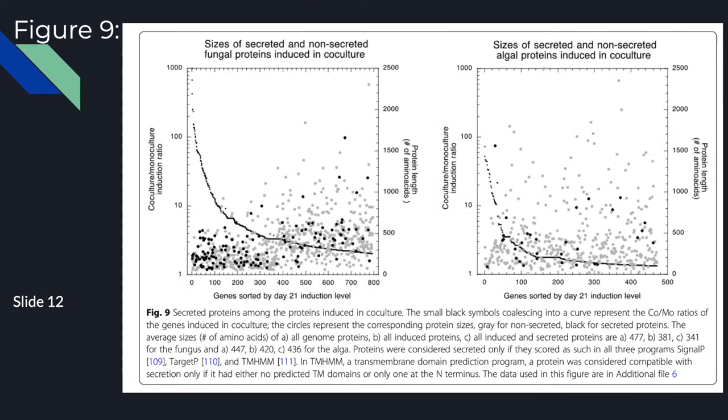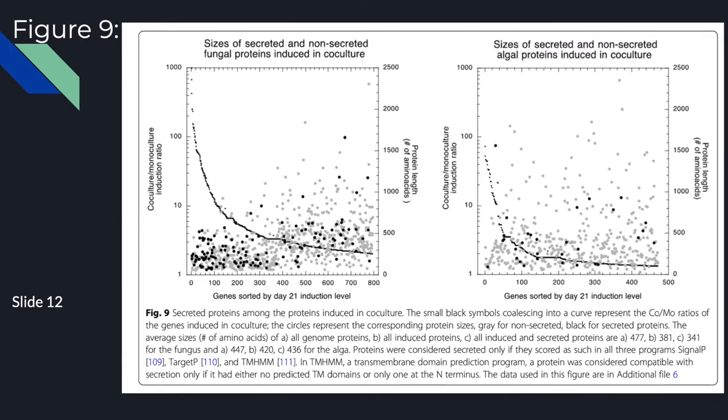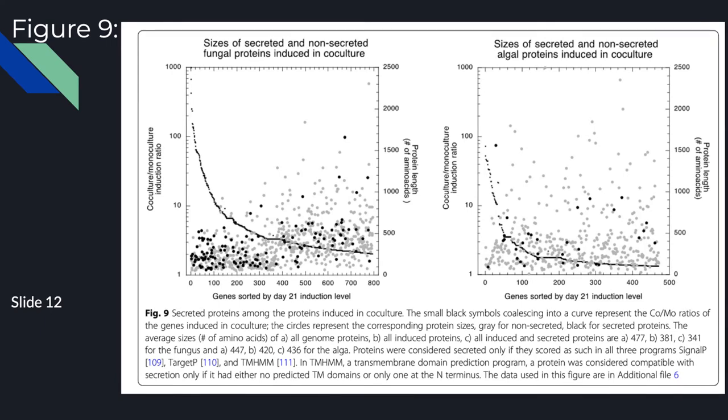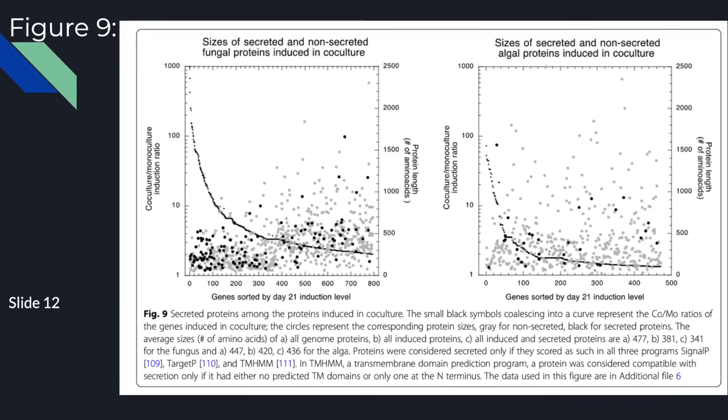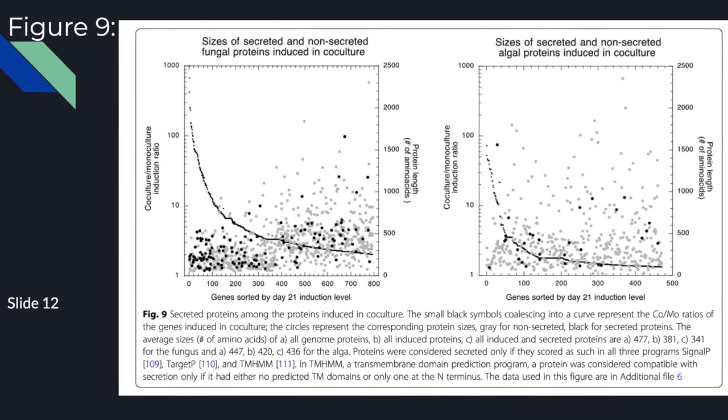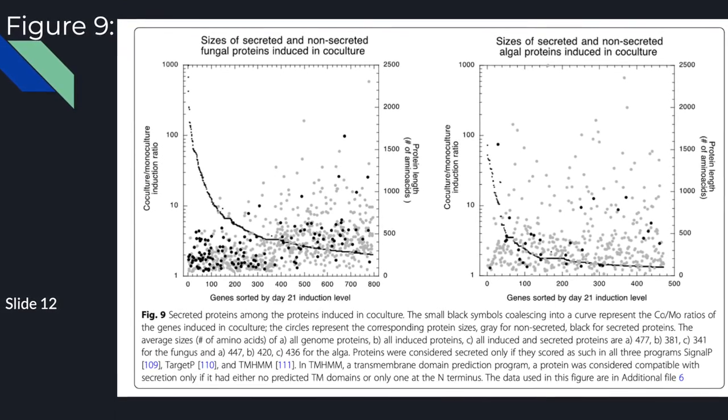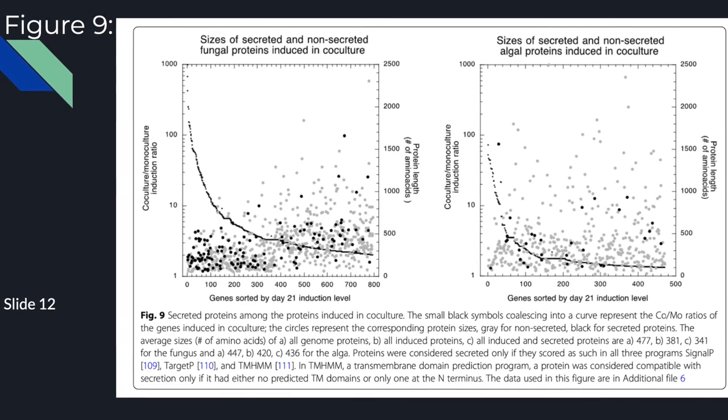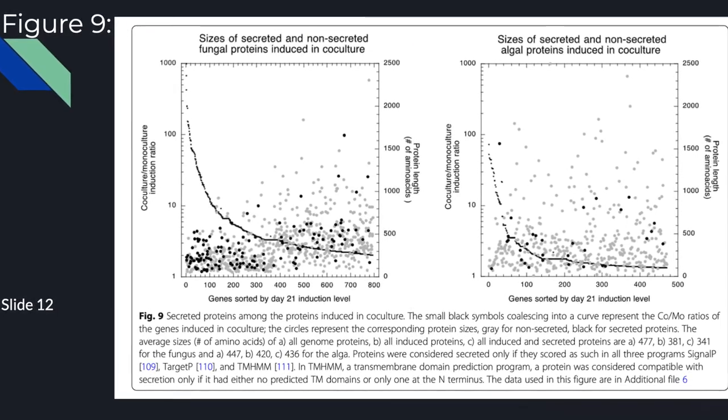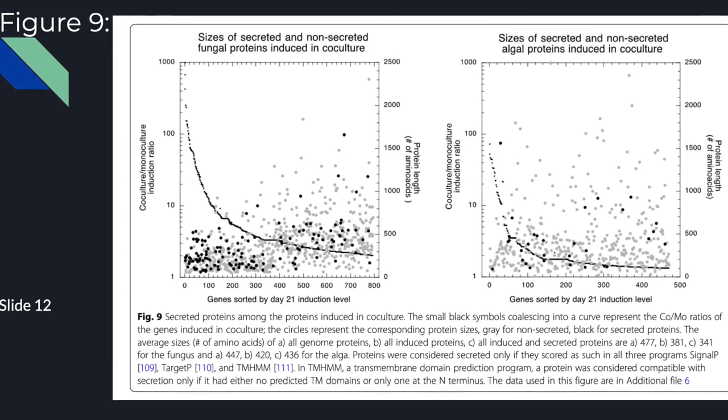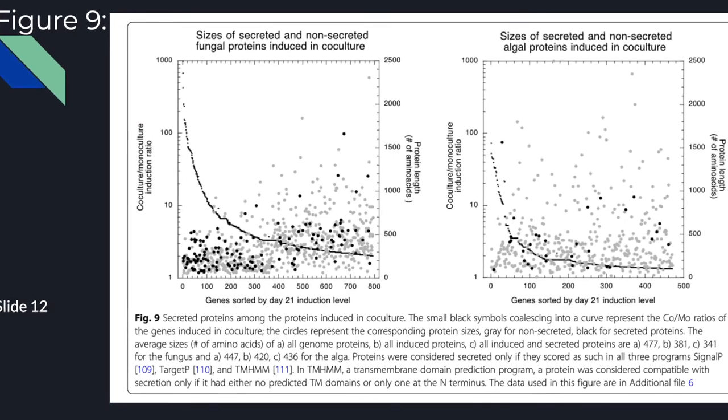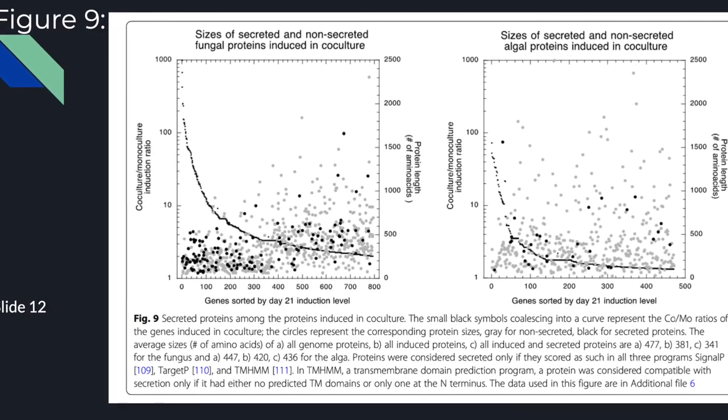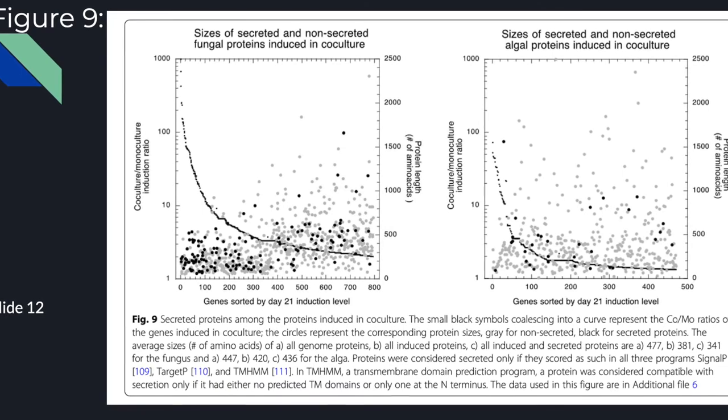This information is also described in figure 7 just giving a picture of what the induction and repression of genes looks like against the entirety of each symbiont's genome. Here the graph is composed of a point for each gene in each symbiont's genome plotted against its co-mono ratio where all the genes that by the researchers standards were considered to be induced are highlighted in red while all those considered to be repressed are highlighted in blue. As you can see 795 fungal genes and 471 algal genes were induced in co-culture of the fungus and algae.